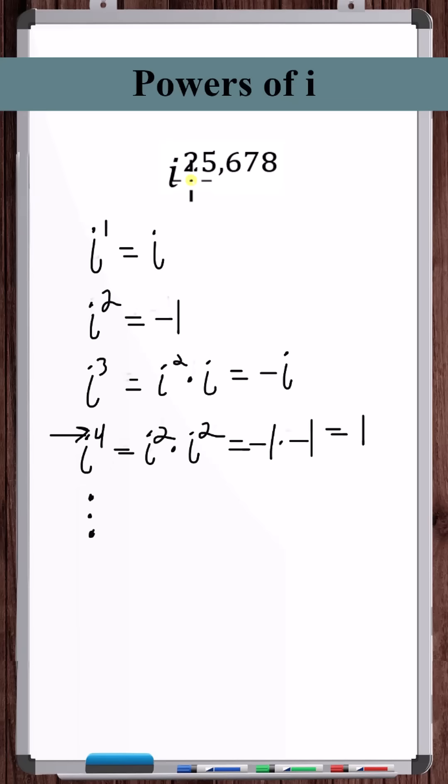So with that, all we need to do is divide this exponent by 4 and see what the remainder is. So 6 times 4 is 24, 4 times 4 is 16, 4 times 1 is 4, 9 times 4 is 36. So the remainder is 2.